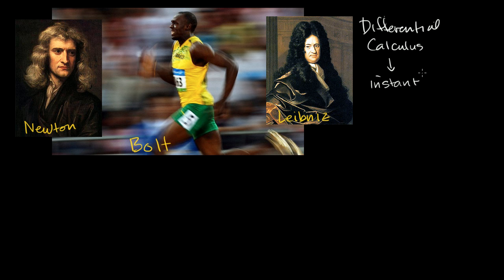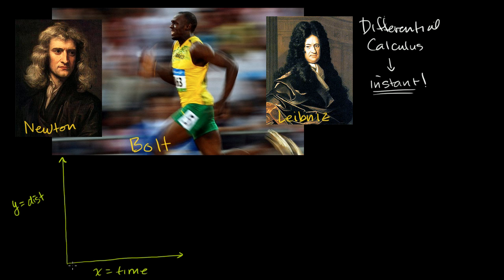To think about why that is not a super easy problem to address with traditional algebra, let's draw a little graph here. On this axis I'll have distance — y is equal to distance. We'll use y instead of d because, especially later on in calculus, d is reserved for something else. And on this axis we'll say time — x is equal to time.